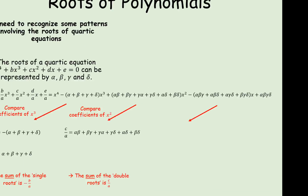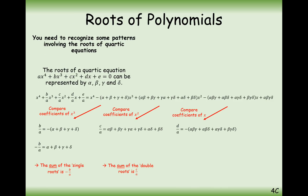For the coefficient on the x term, that's d over a equals minus (alpha·beta·gamma plus alpha·beta·delta plus alpha·gamma·delta plus beta·gamma·delta). This is effectively taking three of the roots and multiplying them together in all four different ways possible — missing delta, missing gamma, missing beta, and missing alpha respectively. So it's the sum of the triples. Remember, d has a negative in front of it, just like b does.